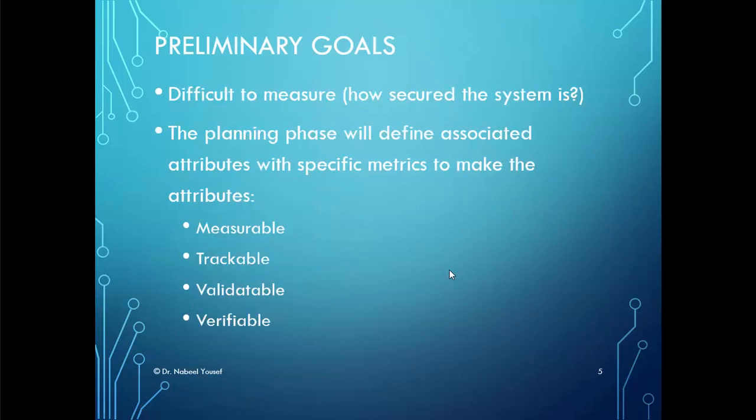Some goals or characteristics are hard to measure. As a result, associated attributes will be defined with specific metrics to make sure that the attribute is measurable, trackable, validatable, and verifiable. A measurable attribute has a well-defined metric and a methodology to confirm it has been implemented correctly. Trackable means the ability to keep track of measurements taken for a specific attribute. Validatable means comparing the stated goal with the actual measured goal to ensure it matches what the customer specified. Verifiable means ensuring that measurements of an attribute or goal are properly recorded through repetition, tracing, or other means.